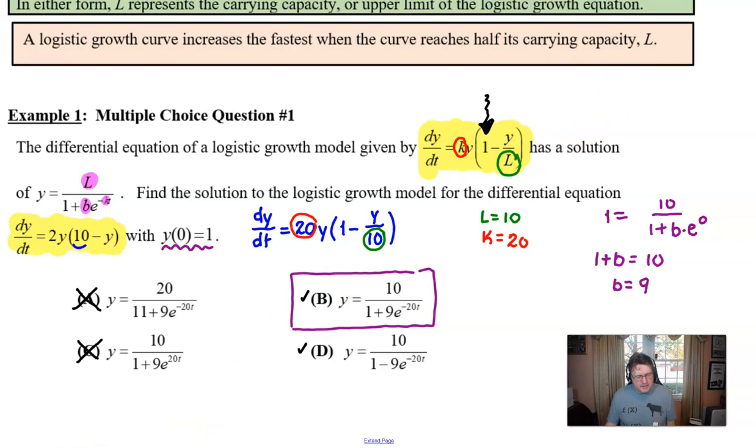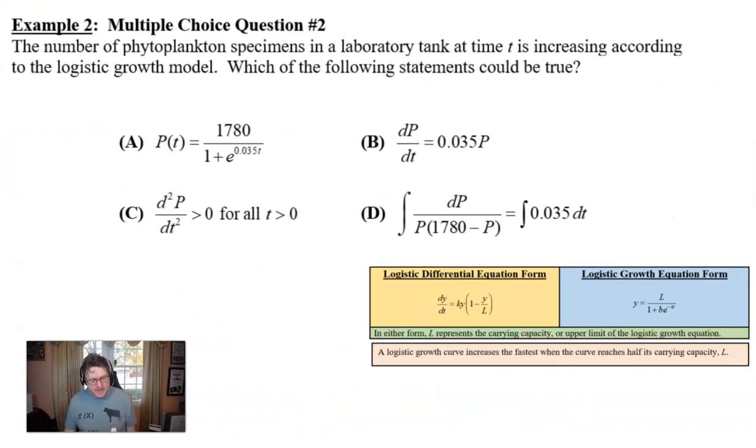Let's look at the next example. Now we have a question that asks or presents a model saying that the number of phytoplankton specimens in a laboratory tank at time T is increasing according to the logistic growth model. Which of the following statements would be true? Really you've got four different equations, some of which are solution equations, one of which is a differential equation. One's a second derivative, and one is like an integral setup.